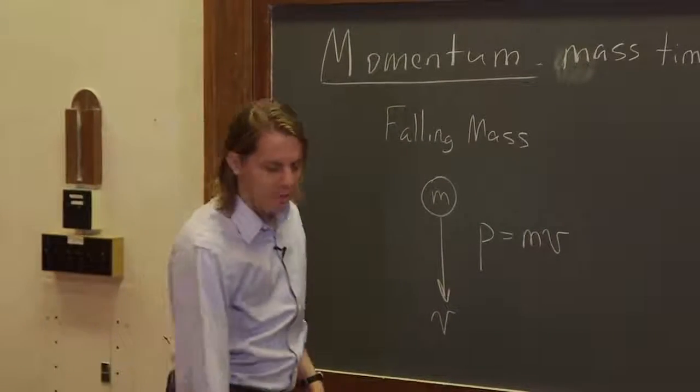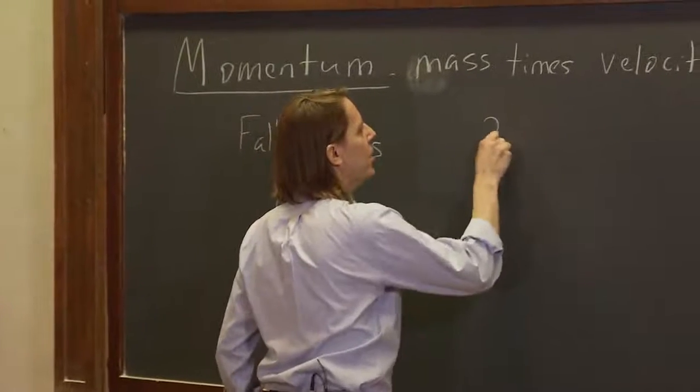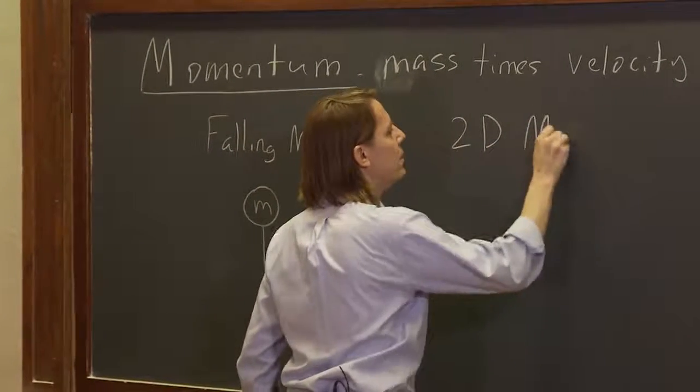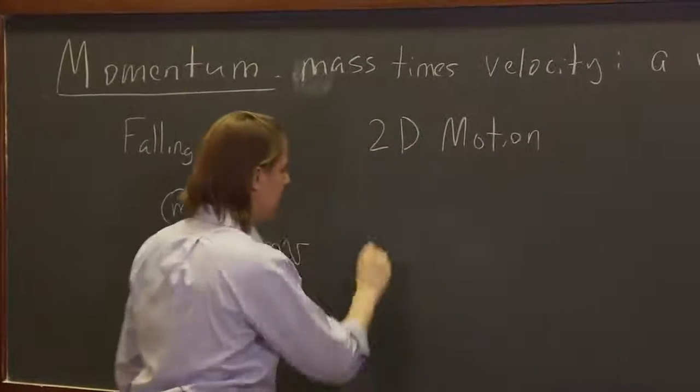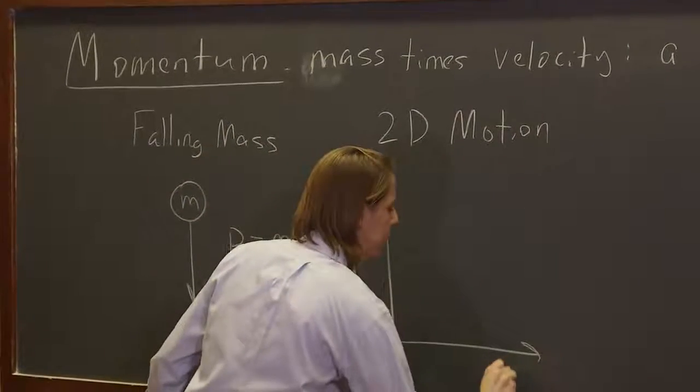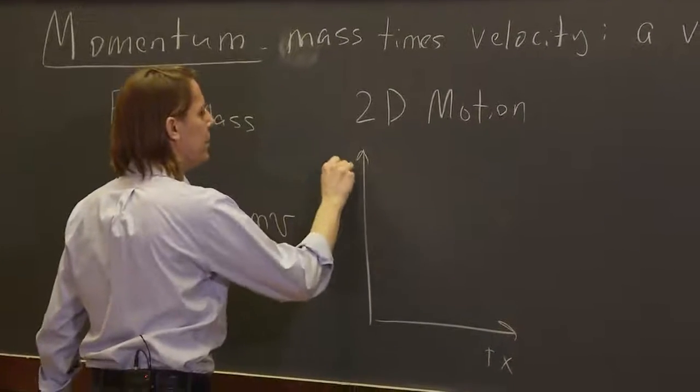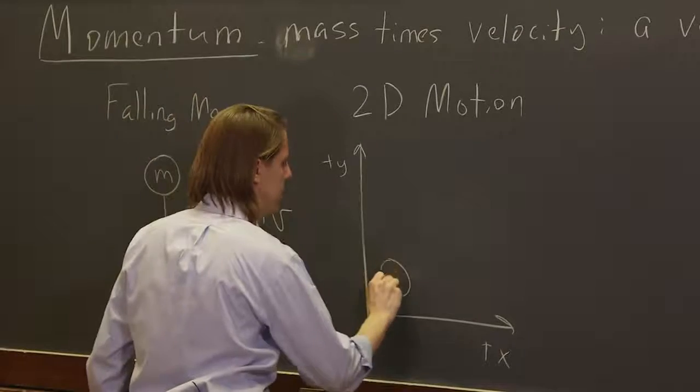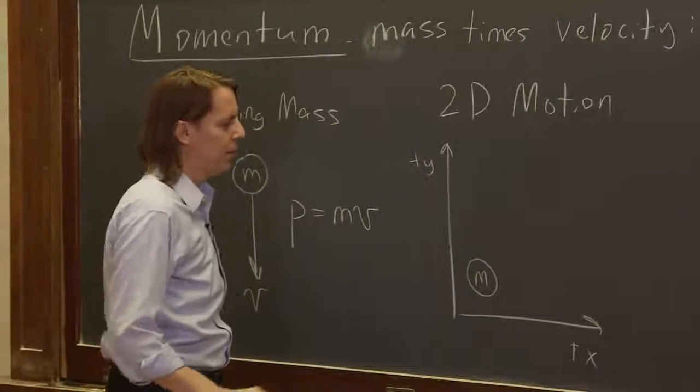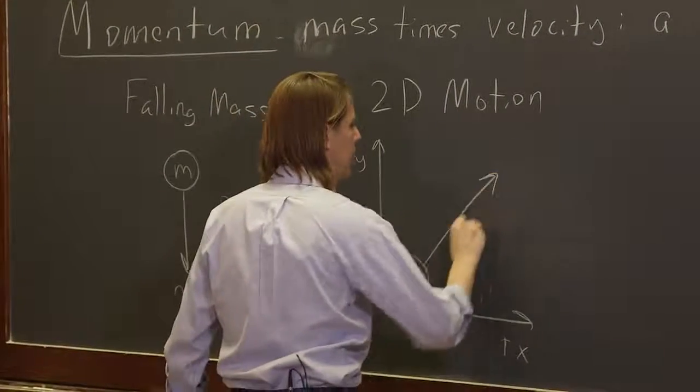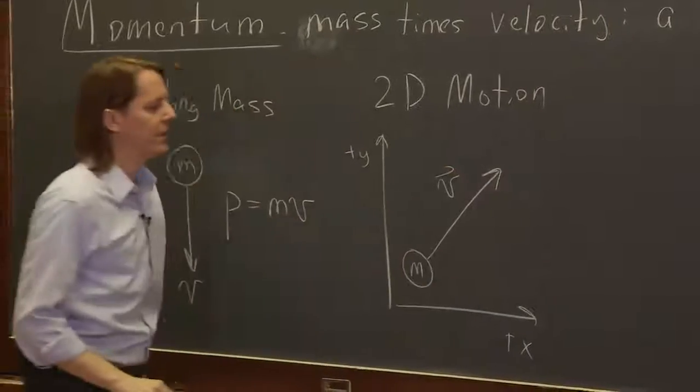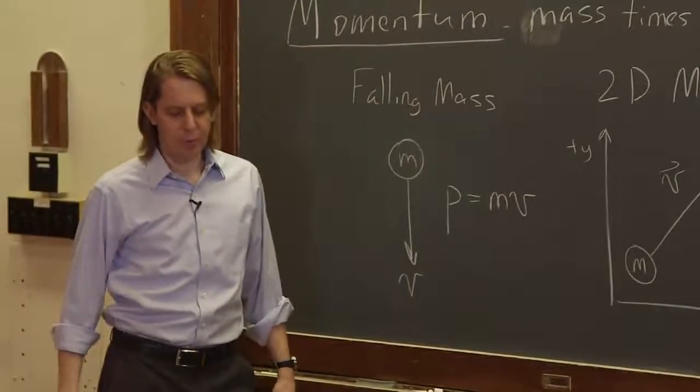But of course, if you're doing two dimensions, then you have to keep up with the vector part. So 2D motion. All right. So say we have our plus x and our plus y. And here we have a mass, maybe a tau. And it's moving with some velocity vector like that, which you could break into components.